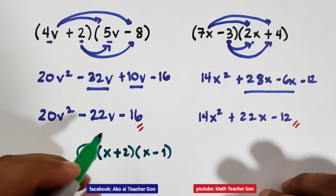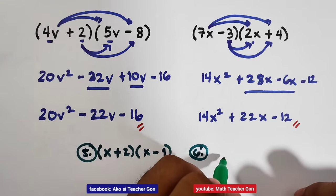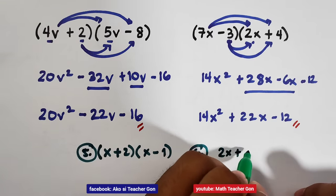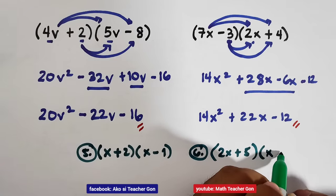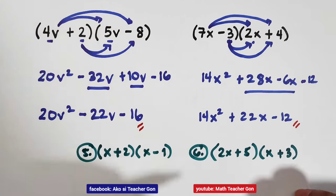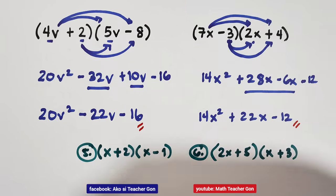And I will add another number. Let's have number 6. We have 2x plus 5 times x plus 3. So I hope, guys, you learned something from this video on how to find the product or on how to multiply the two binomials using the FOIL method. Actually, FOIL method is an example or part of the distributive property.